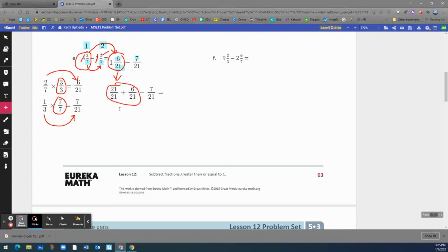So we're going to rewrite this 21 plus 6 equals 27, 27 over 21, which is that denominator, minus 7 twenty-firsts. Okay.